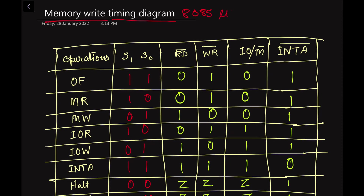We will learn about the different signals that are used for the timing diagram. A timing diagram is the graphical representation of the various signals in the microprocessor used for the various operations. We have already learned about the opcode fetch operation and the memory read machine cycle, and in this video we will learn about the memory write.